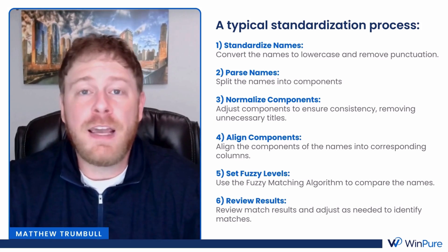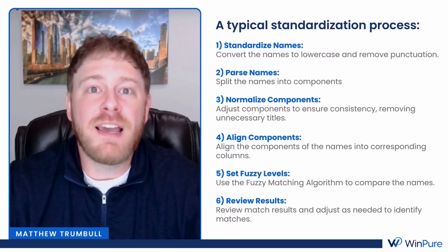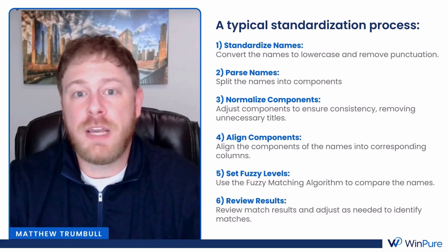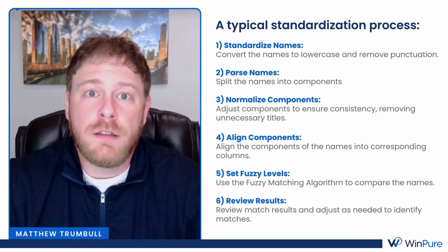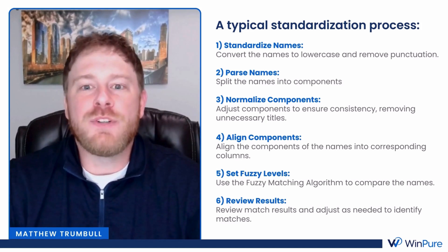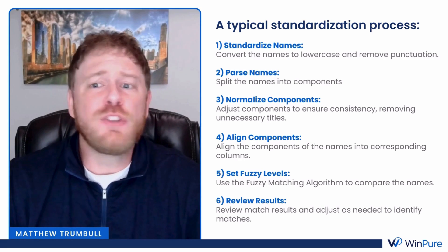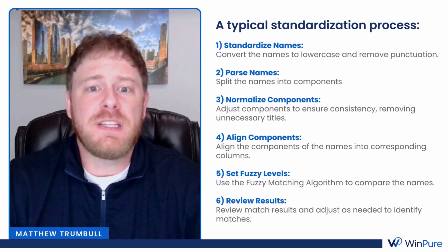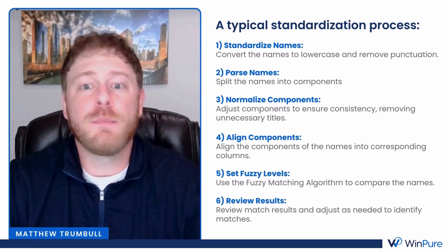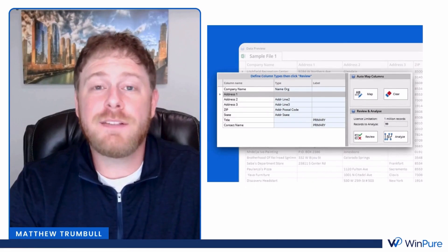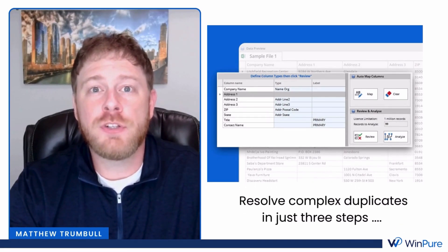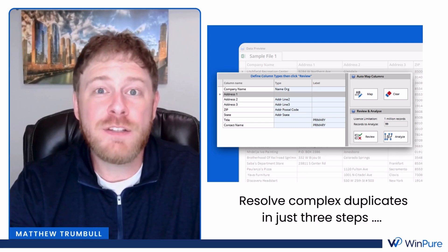Then you use VLOOKUP or a different data matching algorithm to try and identify matches within those names, and finally review the results, adjust them, and do it again. This can take hours of manual effort to identify, deduplicate, and standardize these fuzzy names in Excel. Most of the time it's impossible to do it with complex cultural names as well.